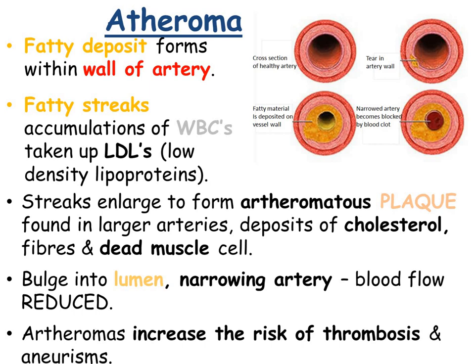Atheromas are fatty deposits which form within the walls of arteries. These fatty streaks are accumulations of white blood cells which have taken up low-density lipoproteins, or LDLs. LDLs are the bad ones — the litter droppers that deposit harmful material onto the arteries. The streaks become enlarged to form atheromatous plaques, and these plaques become quite hardened, making them difficult to get rid of once they've developed.